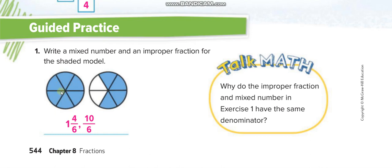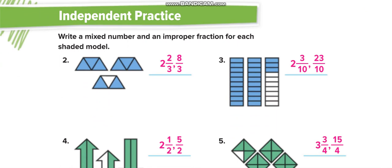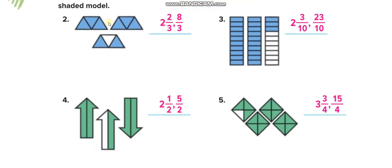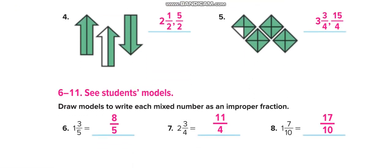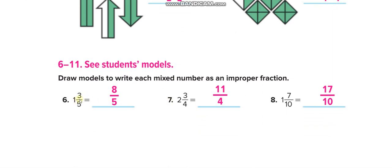This example starts with a drawing: one whole and 4 out of 6 shaded, so the mixed number is 1 and 4/6. Converting to an improper fraction: 1×6=6, 6+4=10, giving 10/6.